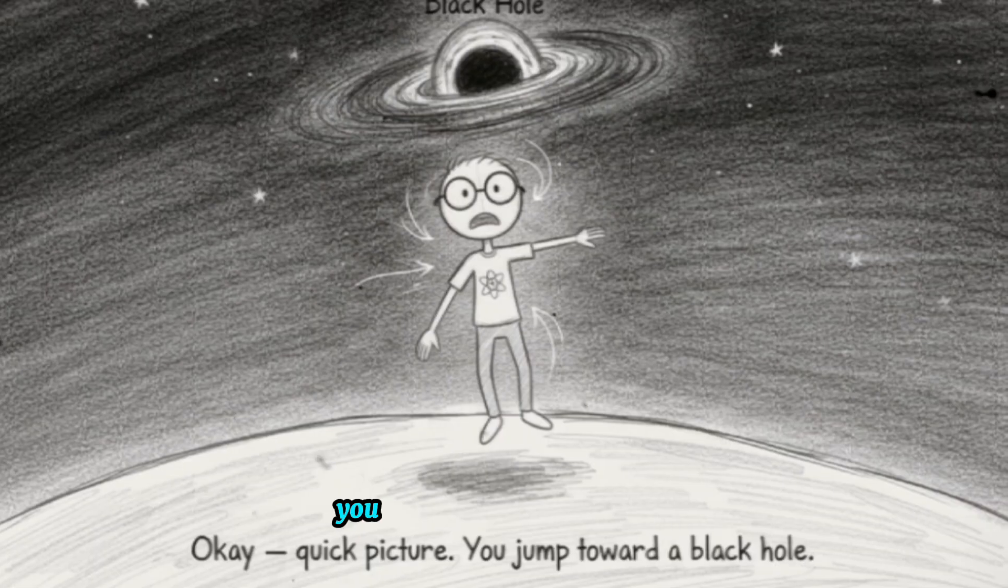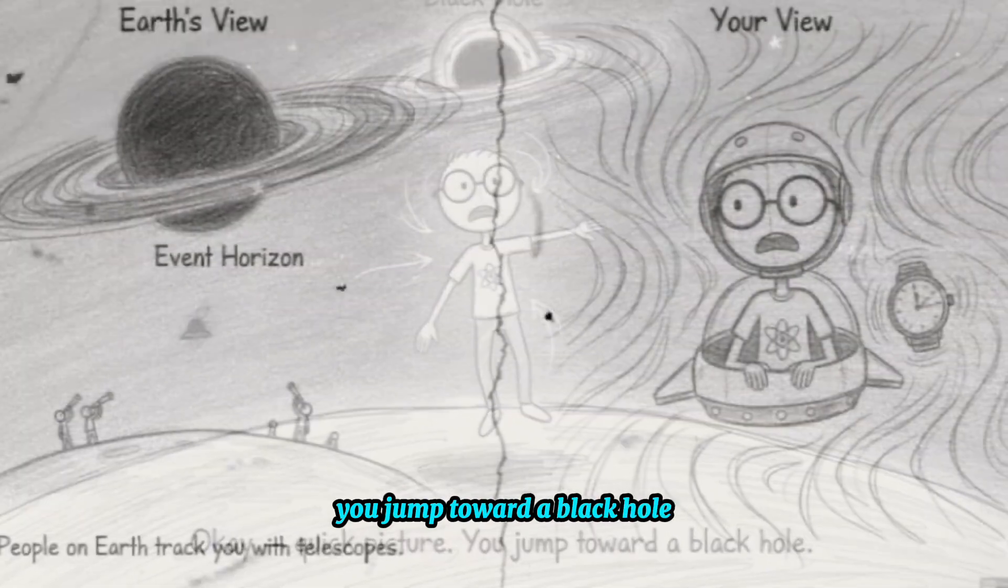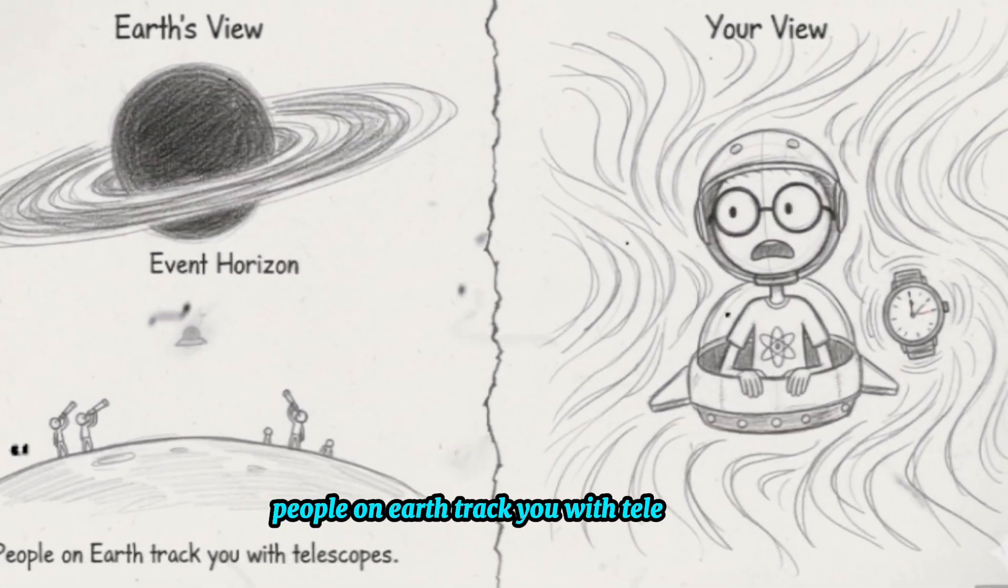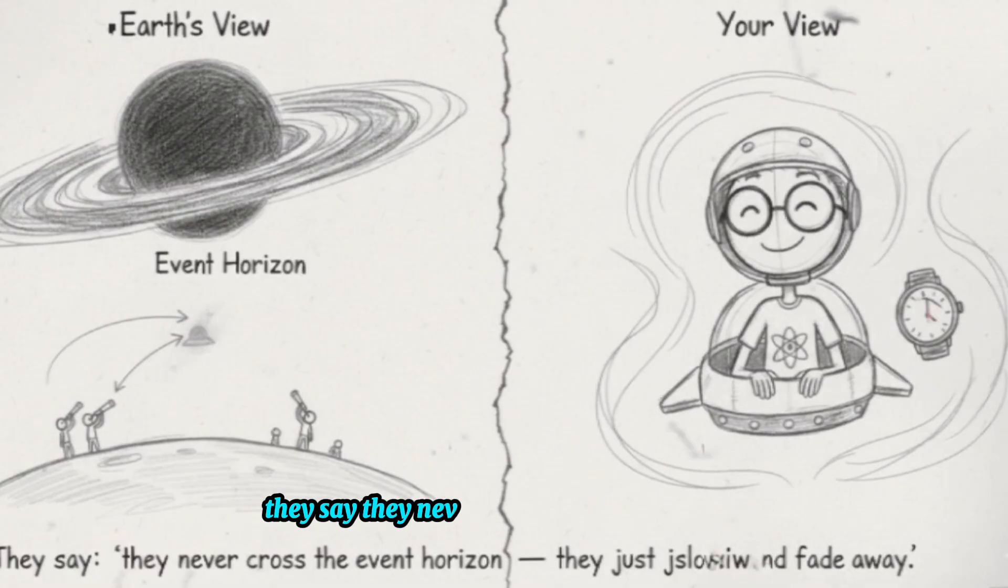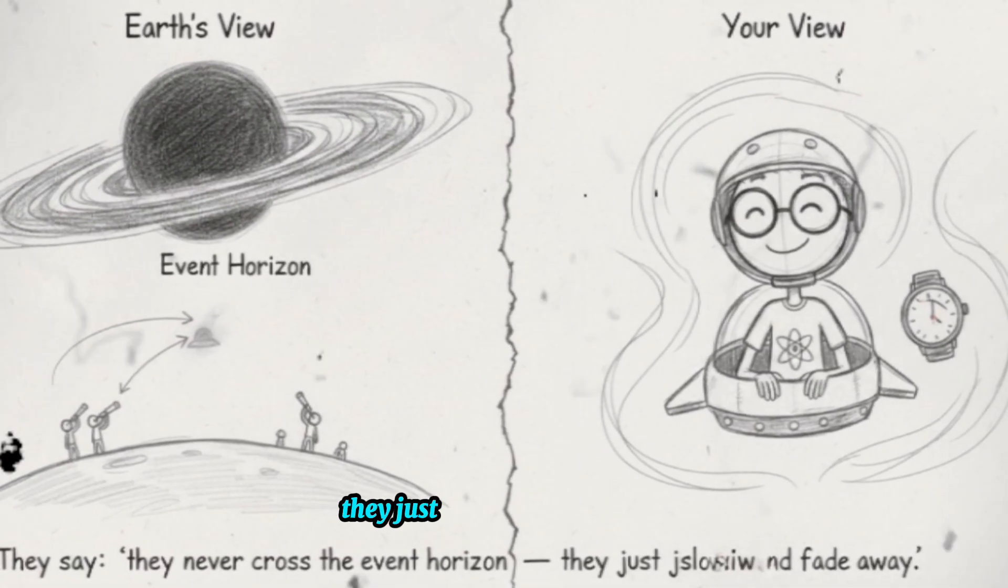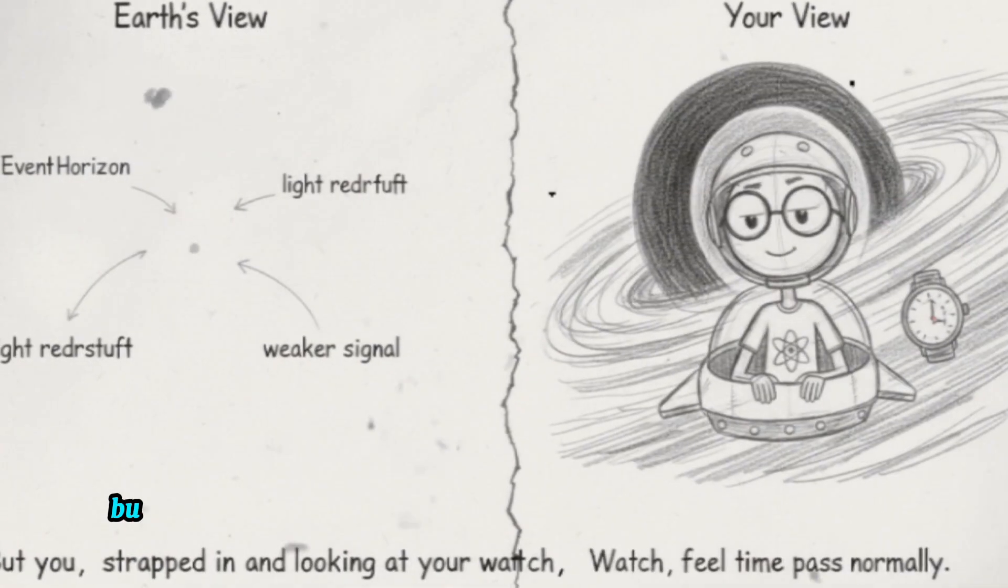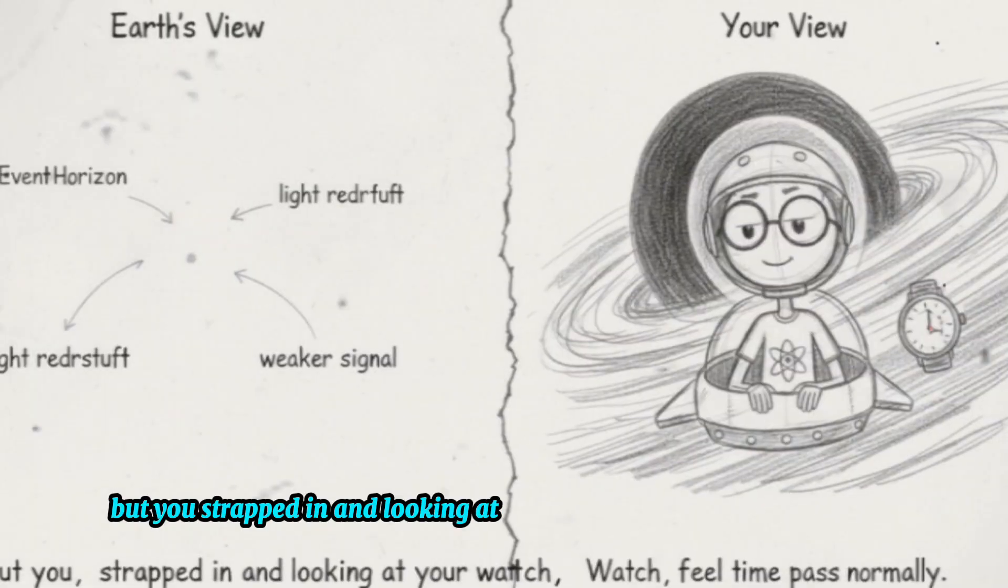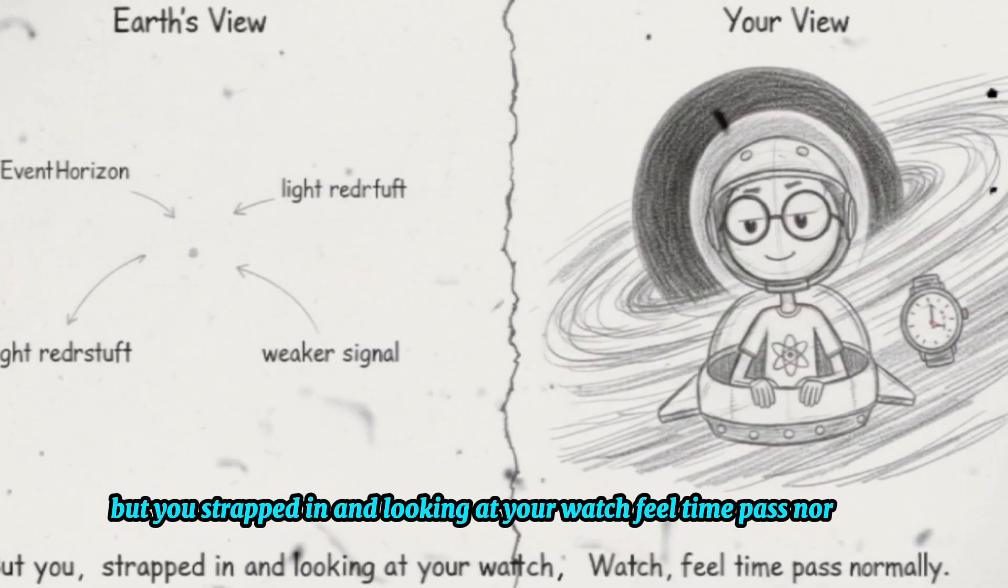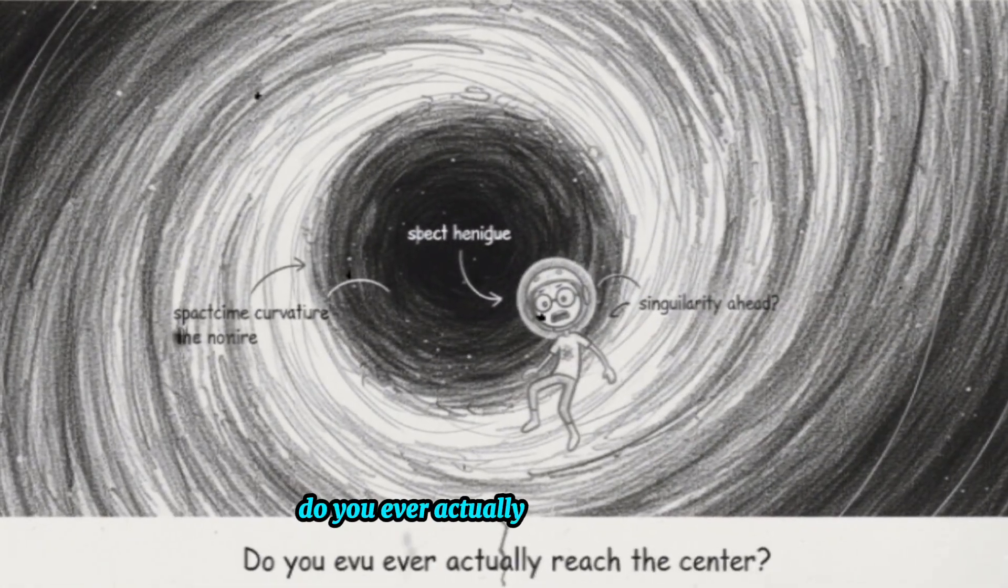Okay, quick picture. You jump toward a black hole. People on Earth track you with telescopes. They say you never cross the event horizon, you just slow and fade away. But you, strapped in and looking at your watch, feel time pass normally. Do you ever actually reach the center?